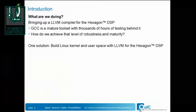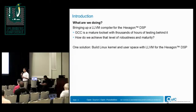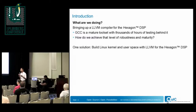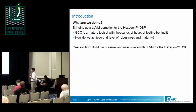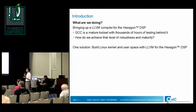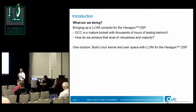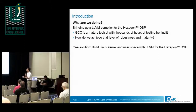We're essentially transitioning our users from GCC onto LLVM. One of the things our users really care about is robustness of the compiler. GCC is extremely mature — people have been hammering on it for years, thousands of hours of testing. All the obscure bugs from running wide code bases have been identified and fixed. Our biggest challenge is how do we approach that level of maturity with LLVM.